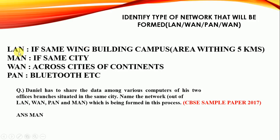To identify the network type: LAN applies to the same wing, building, campus, or area within 5 km. MAN applies if the network is within the same city. WAN applies across cities or continents. PAN applies if Bluetooth technology is used — for example, if persons connect their mobiles via Bluetooth, the network type is PAN.